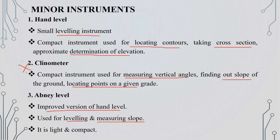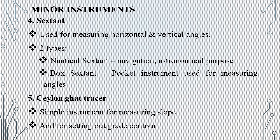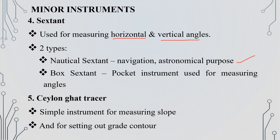The next instrument is the sextant. We use it to measure horizontal and vertical angles. There are two types: the nautical sextant, used for navigation, and the box sextant, which is a pocket instrument used to measure angles.